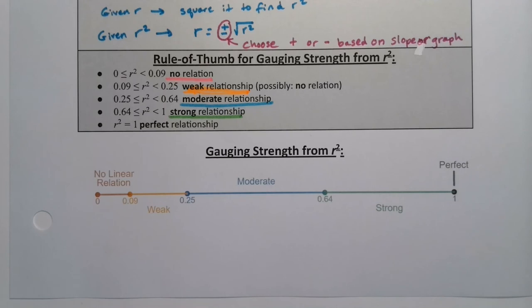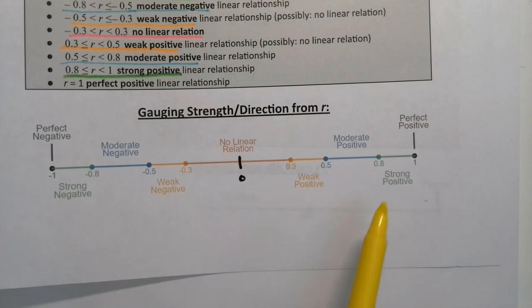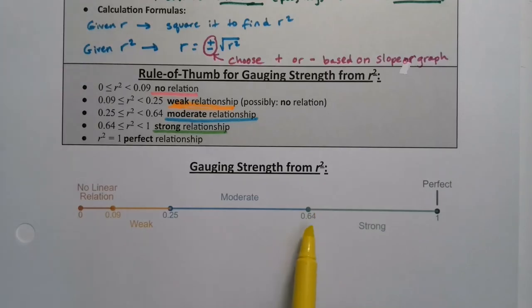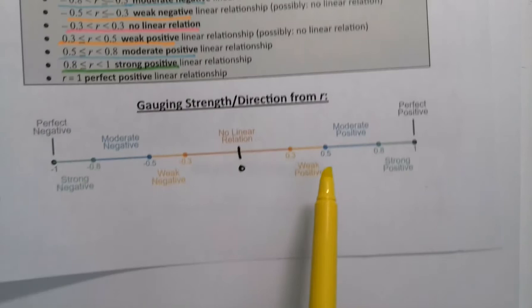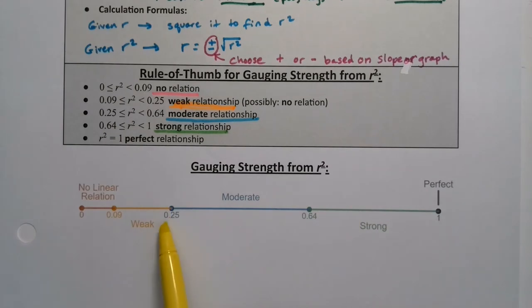Alright, so where did those numbers come from? Like, how did we get those? The answer is they're actually the same numbers from before. So, if I go and grab section 4.1 for a second, I can show you that they come right out of the same table that we had for r. So, for example, look at the strong relationship. It begins over here at 0.8. But 0.8 times 0.8 is 0.64, which is where that number comes from. Because it's r squared. So take 0.8 and square it, and you have it. And moderate began at 0.5, right here. So 0.5 times 0.5 is 0.25, which is where that zone begins. So actually, they're the same numbers as before, or derived from the same numbers as before. They're the numbers from before squared.